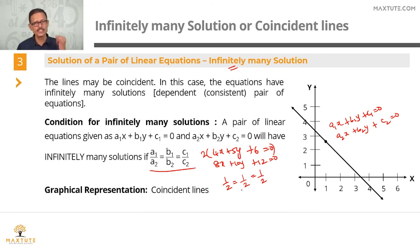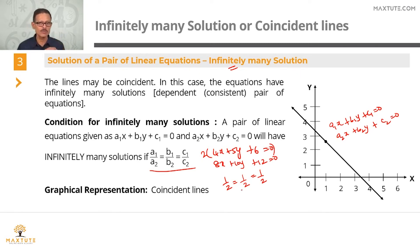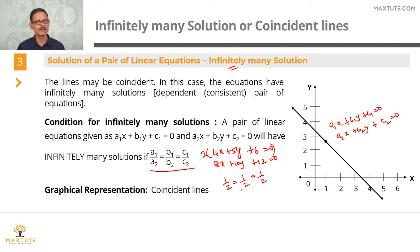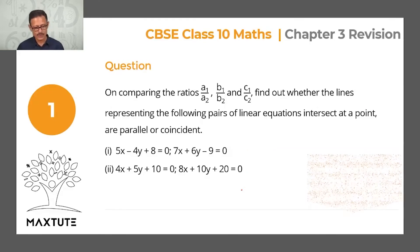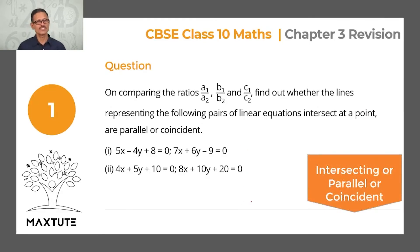To summarize: unique solution when a1 by a2 is not equal to b1 by b2; no solution when a1 by a2 equals b1 by b2 but is not equal to c1 by c2; infinitely many solutions when a1 by a2 equals b1 by b2 equals c1 by c2. That covers concept one. Let's look at how this is tested.